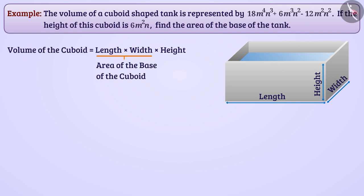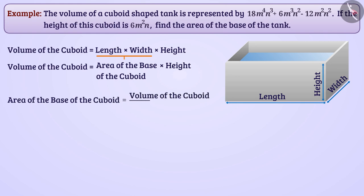Therefore, we can say that the volume of the cuboid equals the area of the base of the cuboid multiplied by height. In this way, the area of the base of the cuboid will equal the volume of the cuboid divided by height of the cuboid, which we can write in this way.